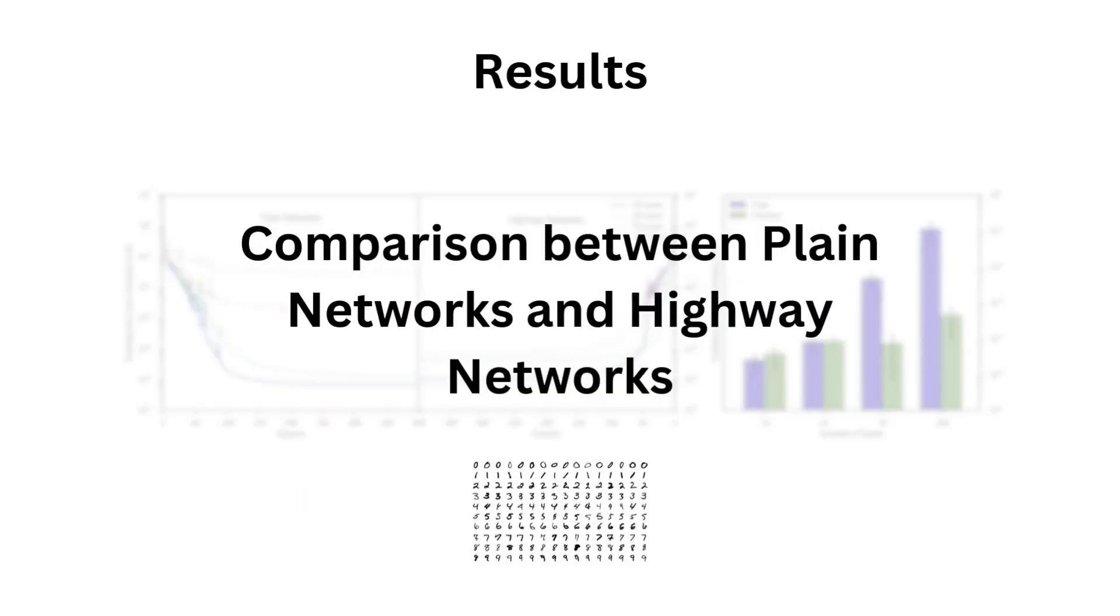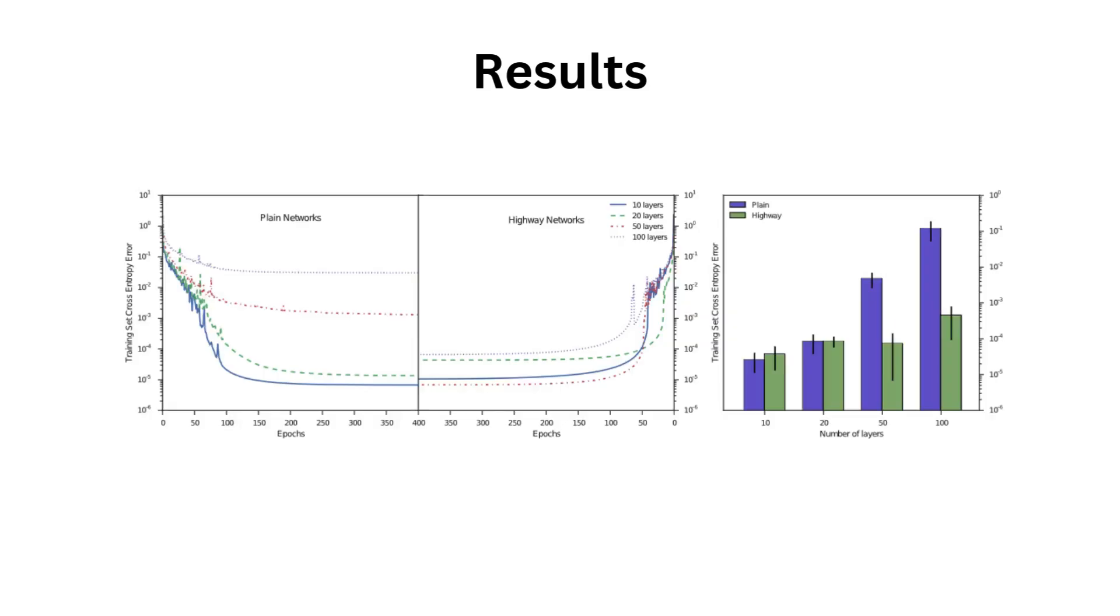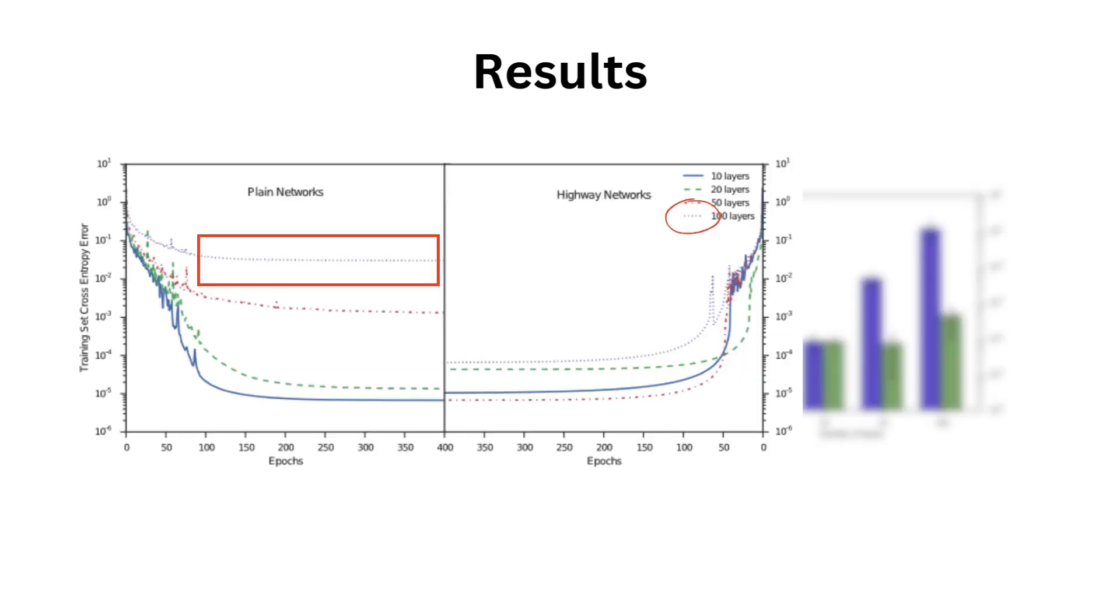In the first experiment, the author decided to compare between a plain network, so regular VGG type of network, and their convolutional highway architecture. They modulated the depth of both types of networks from 10 to 100 while training them on the MNIST dataset. As we see on the left, the 100 layer plain network is having a hard time optimizing its performance and is way less performant than any other layer depth.